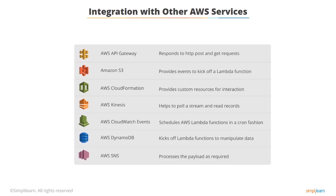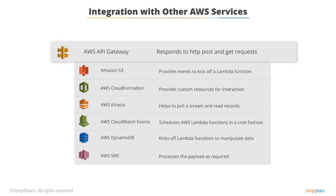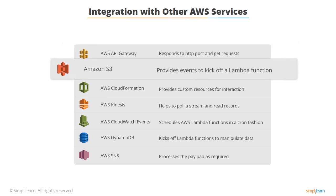AWS has many integrations built into many of their services. AWS API Gateway provides you with a way to build APIs that can be backed by Lambda to respond to HTTP POST and GET requests. API Gateway is often used with the AWS Mobile SDK to build mobile applications. Amazon S3 can provide events when certain triggers occur, which can cause a Lambda function to kick off — this can be used for things such as resizing images.